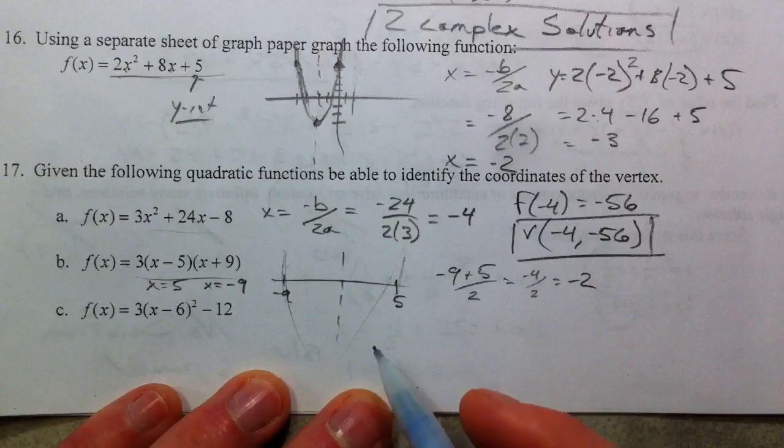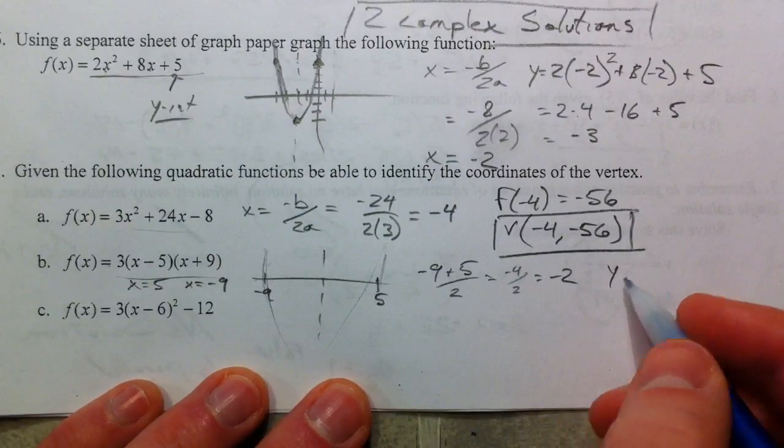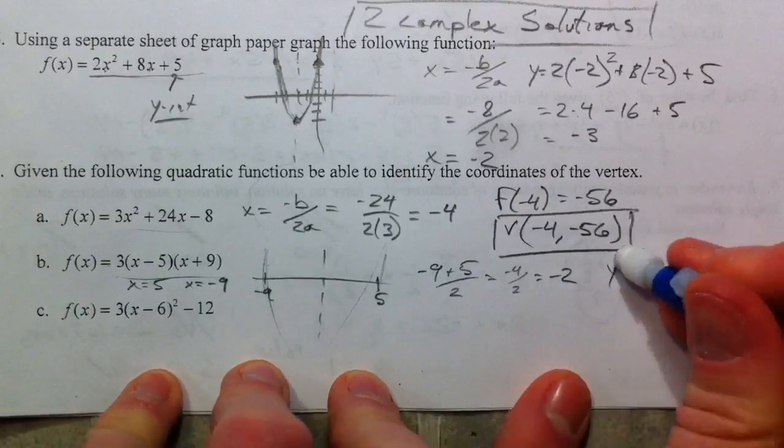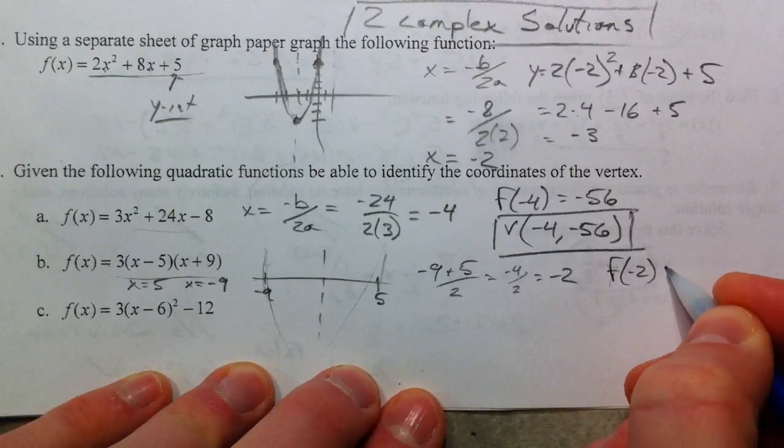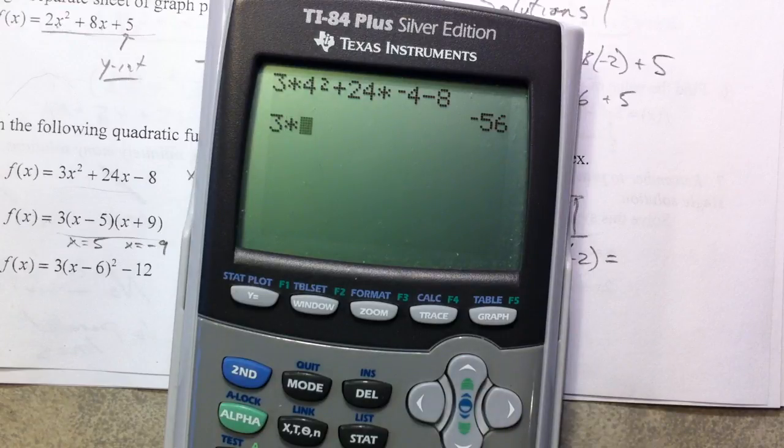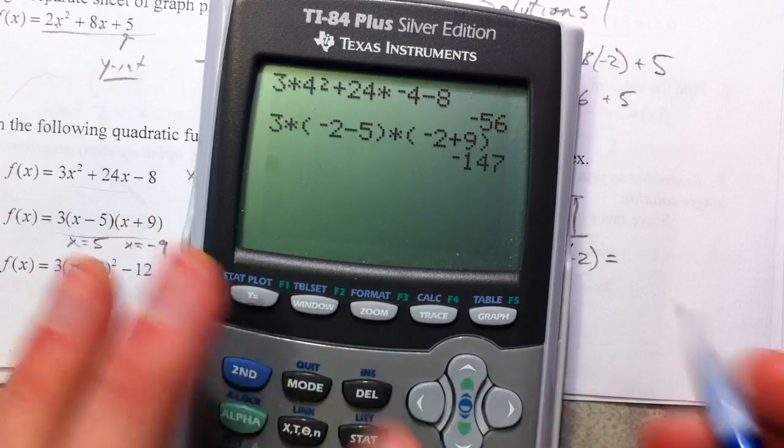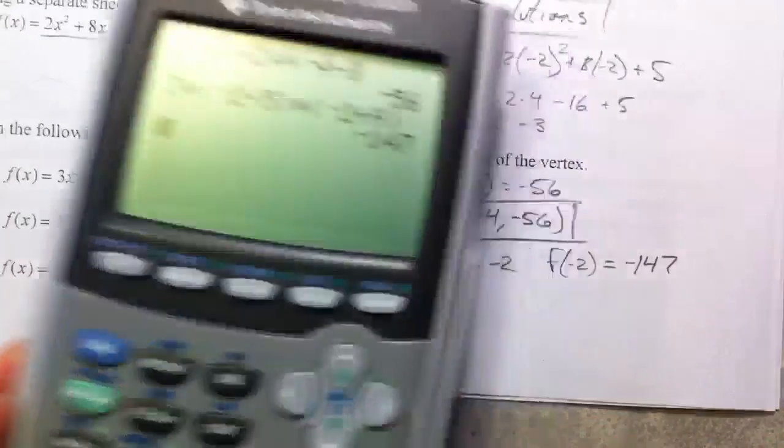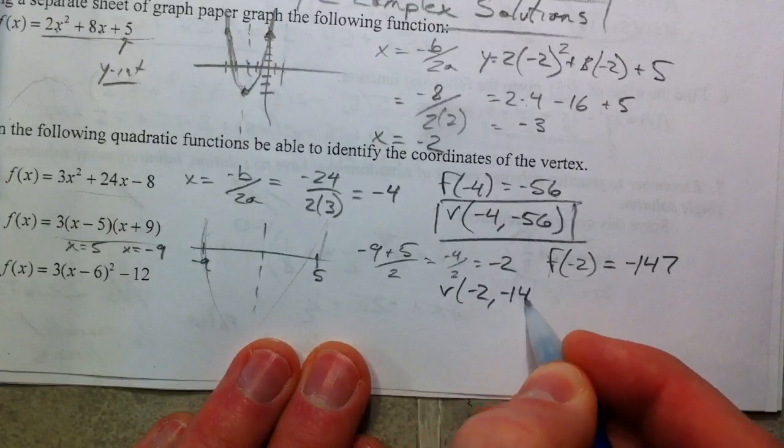Negative 2 smack dab in the middle of negative 9 and 5. And so you find the y value by finding f, let's just do it the same way, f of negative 2. So you take negative 2, 3 times negative 2 minus 5 or negative 7 times a negative 2 plus 9. So negative 147. And so our vertex is negative 2, negative 147.